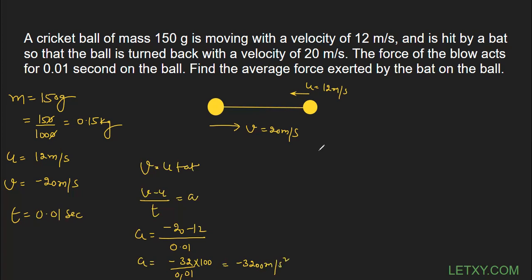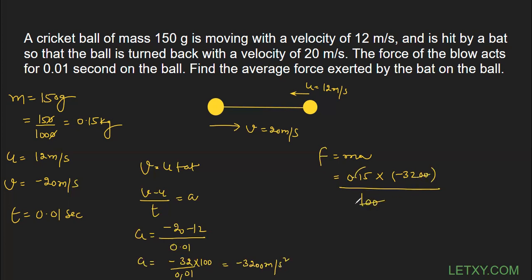Now we need to find the average force. F = ma, where m = 0.15 kg and a = -3200 m/s². Calculating: 0.15 × 3200 — removing the decimal gives 15 × 32 in the numerator divided by 100 in the denominator, the zeros cancel. 15 × 32: 15 × 2 = 30, 15 × 30 = 450, so 450 + 30 = 480. The average force is 480 N.